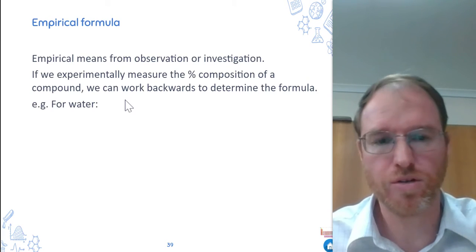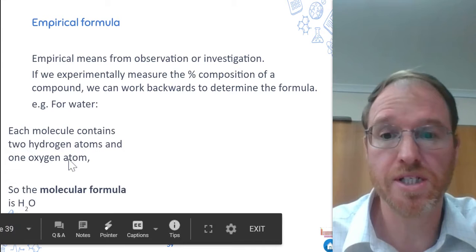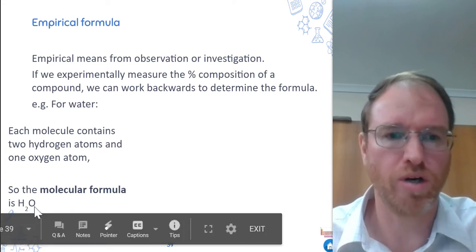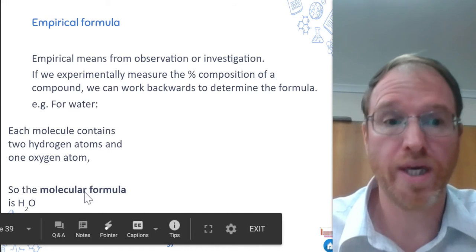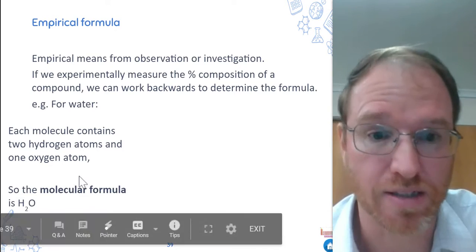So for water, let's think first of all just of what we know of water. Each molecule contains two hydrogen atoms and one oxygen. So we know the molecular formula is H2O. Molecular formula meaning we actually know what's in a molecule. It's got two hydrogens, one oxygen. That's what it is.